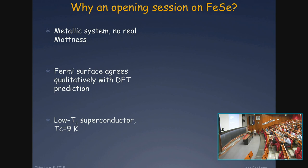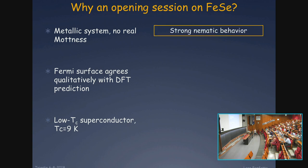The Fermi surface predicted by density functional theory agrees at a qualitative level at least with experimental measurement. This is also a relatively low Tc superconductor, with a Tc of 9 Kelvin. So apparently this is not a good system to start with at this workshop, but actually there is something much more than this.